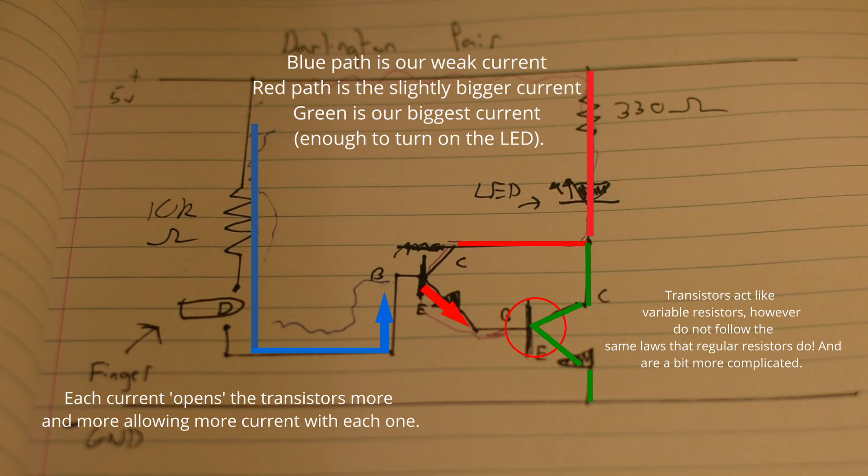So this is what amplification actually is in this circuit. We're not just magically turning this very tiny current going through my fingers into a larger one. We're actually just changing a set of valves, as we can imagine what the transistors are, to allow more current to flow through another section of the circuit.